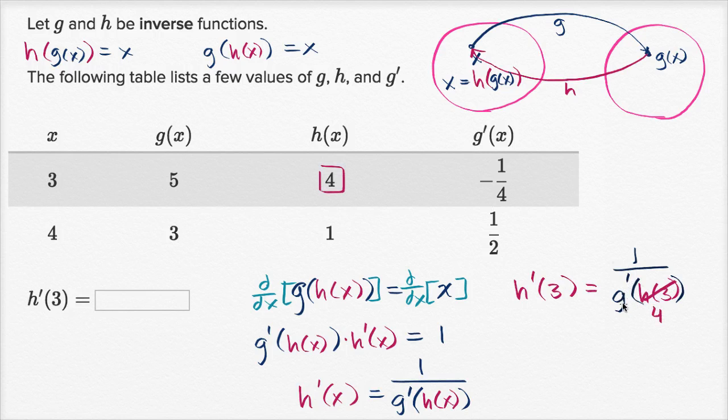So h of three is four. So now we just have to figure out g prime of four. Well, lucky for us, they have given us, when x is equal to four, g prime is equal to one half. So g prime of four is equal to one half. So h prime of three is equal to one over one half. One divided by one half is the same thing as one times two. So this is all equal to two and we are done.